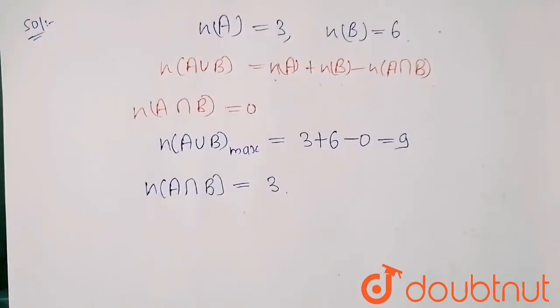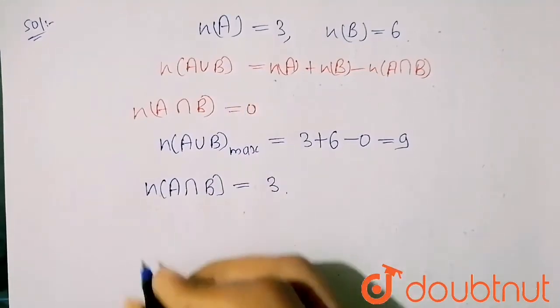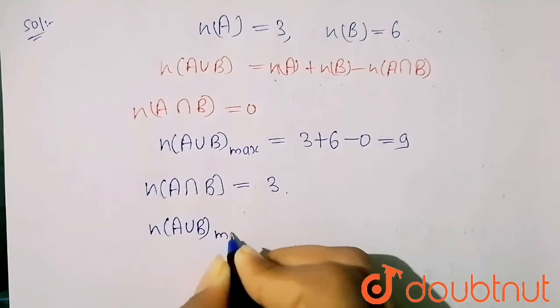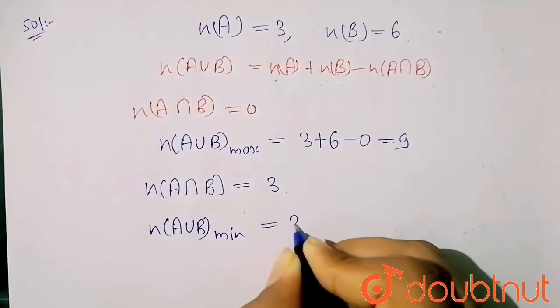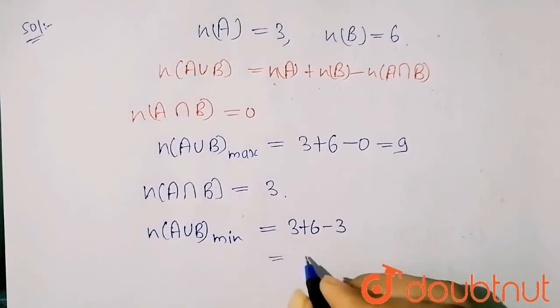So it means that my set A and B have three elements which are at least common in both of them. When I put this value here, I got minimum number of elements. So my A union B minimum will be three plus six minus three. So here I got nine minus three which equals six.